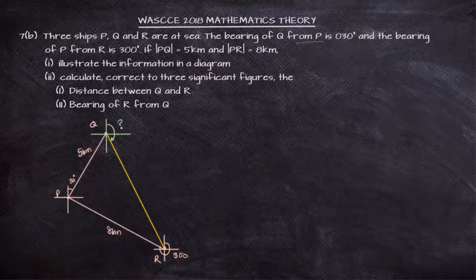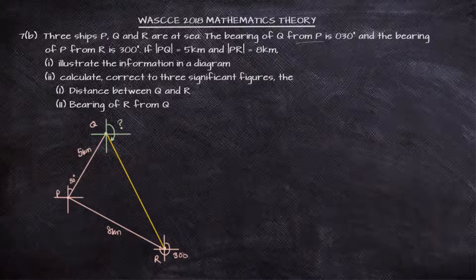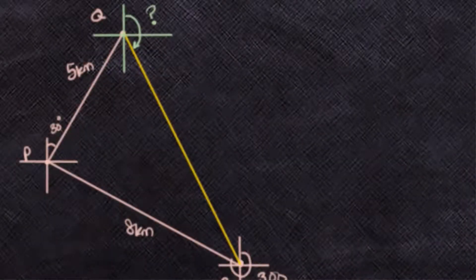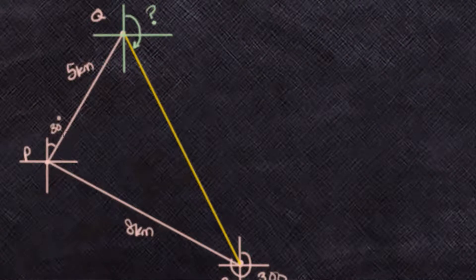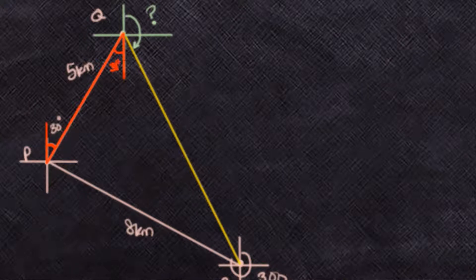If we zoom in into this figure and label appropriately and complete our diagram, there are a number of things that we can notice. For example, at point P we have 30 degrees. But if you consider this alternate angle between P and Q, we'll notice that at point Q this angle here will be 30 degrees because it's alternate to the other 30 degrees.